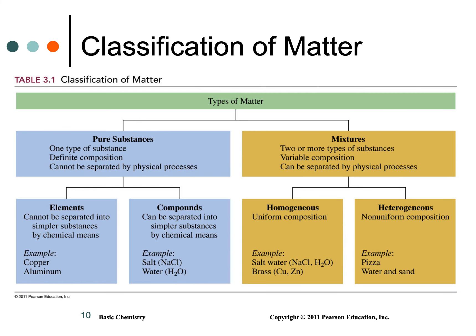To summarize: matter separates into pure substances, which have their own properties, and mixtures, which retain their components' properties. Pure substances are either elements — one type of matter — or compounds — two or more elements combined chemically with new properties. Mixtures are either homogeneous, uniform throughout, or heterogeneous, with non-uniform composition where different parts are visible in different locations. I hope that helps.